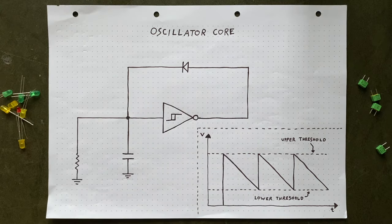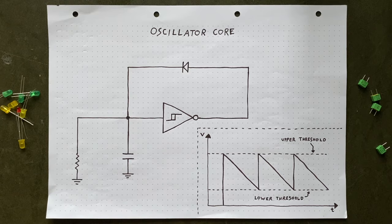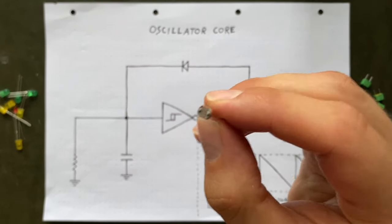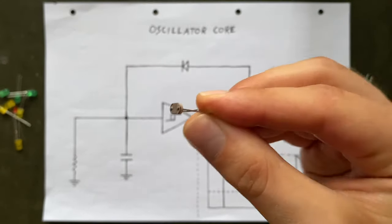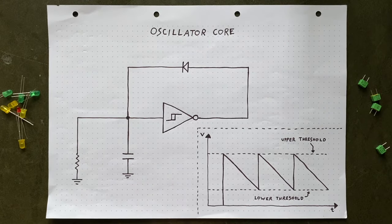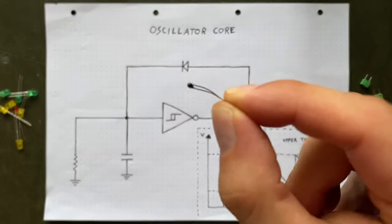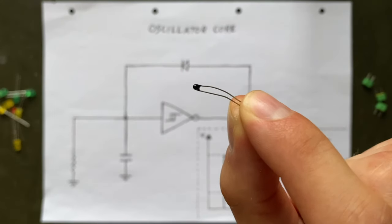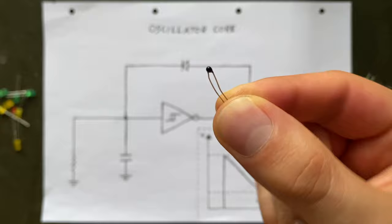Here we thankfully have way more options than just changing it by hand. We could use a light-dependent resistor where the resistance value depends on the amount of light that shines onto it. We could also use a thermistor, which is the same idea but reacting to temperature instead.